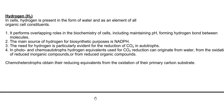In photo and chemo autotrophic organisms, hydrogen equivalents are used for carbon dioxide reduction in the form of NADPH. They can originate from water, from the oxidation of reduced inorganic compounds such as hydrogen sulfide, or from reduced organic compounds such as acetate. Whereas chemo heterotrophic organisms obtain their reducing equivalents from the oxidation of their primary carbon substrate itself.